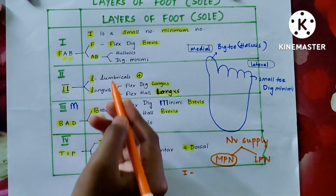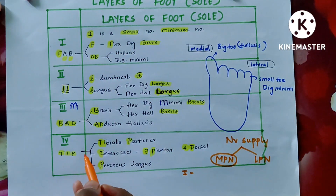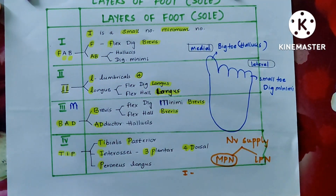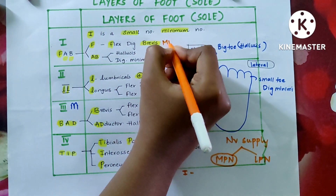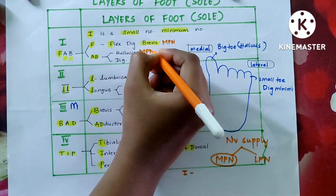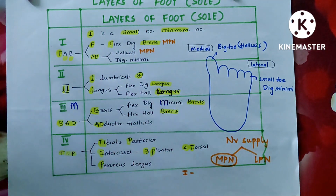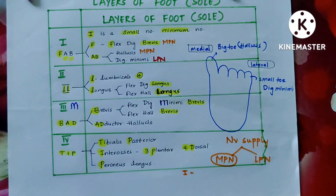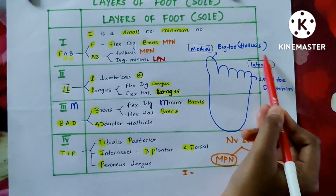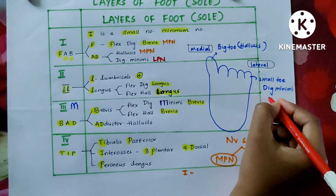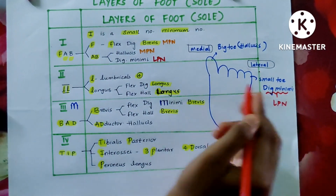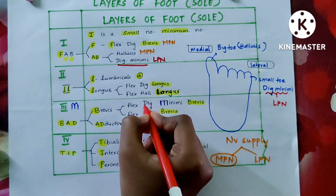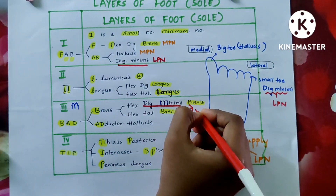In the first layer — flexor digitorum brevis, abductor hallucis, and abductor digiti minimi — the first two muscles, flexor digitorum brevis and abductor hallucis, are supplied by MPN because hallucis is towards the medial side. However, this is not always true — all hallucis muscles cannot be assumed to be MPN. All digiti minimi muscles are supplied by LPN. So wherever the word digiti minimi appears — in the first layer and in the third layer with digiti minimi brevis — those are supplied by LPN.